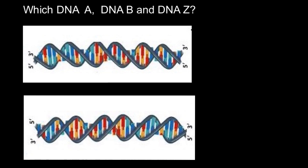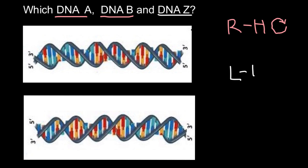Hello and welcome to Nikolai's genetics lessons. Today's problem is which DNA is A, B, and Z. We have three types of DNA. DNA A and DNA B are very close in their conformation — both are right-handed and both go in the clockwise direction. Z-DNA would be left-handed and would go in the opposite, counterclockwise direction.